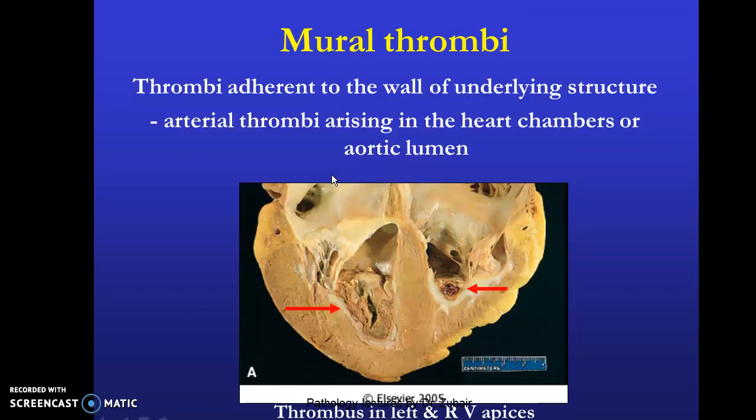Mural thrombi are thrombi adherent to the wall of the underlying structure, such as arterial thrombi arising in the heart chambers or in the aortic lumen. 'Mural' means adherent to the wall. You can see an example of mural thrombi here.